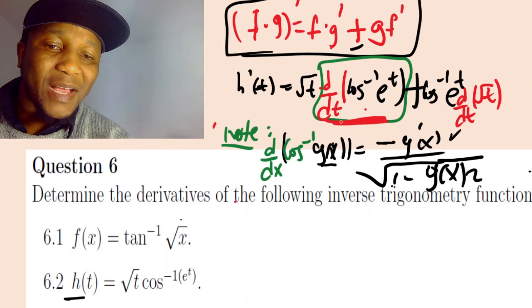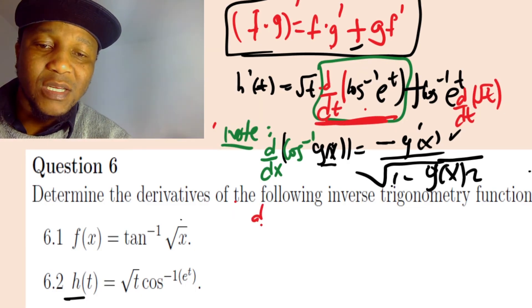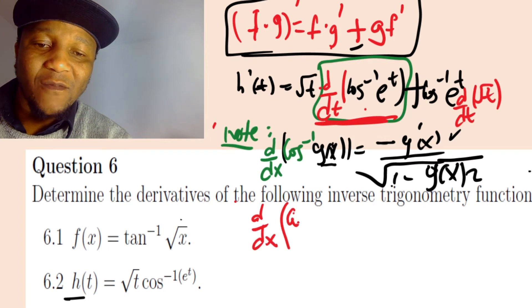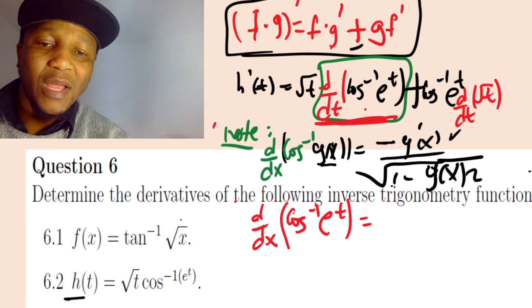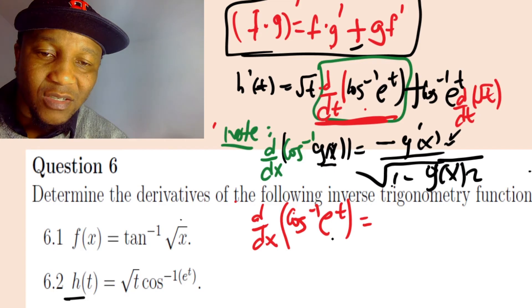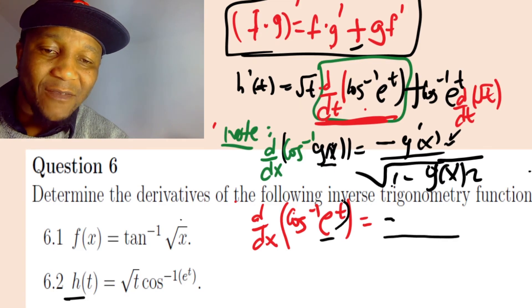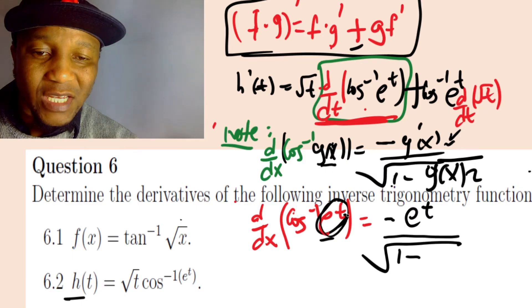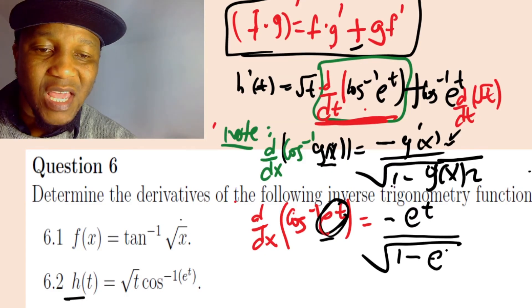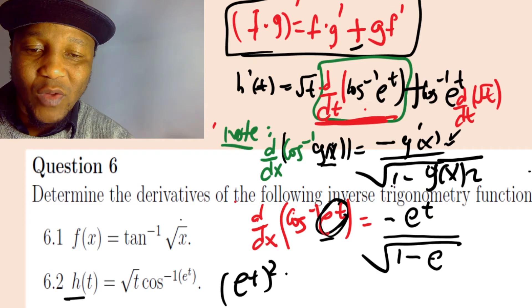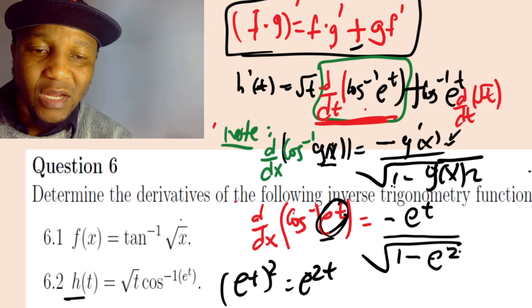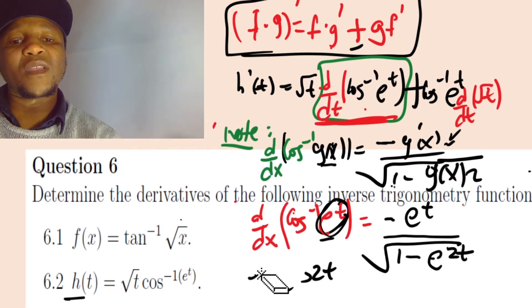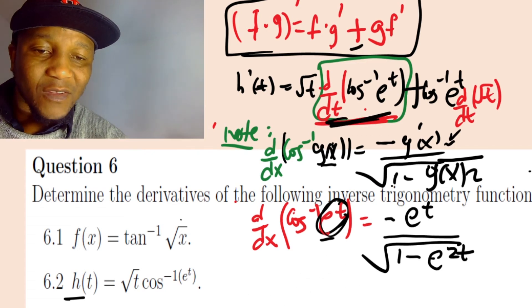So now d/dx of cos inverse of e power t equals - first you must put negative, then when you derivate this you get the same thing, e to the t, over 1 minus, don't forget the square. Square your e of t, which gives e to 2t. When you derivate all of this, it gives you this.